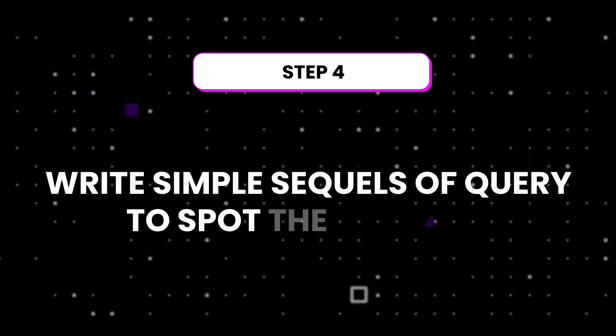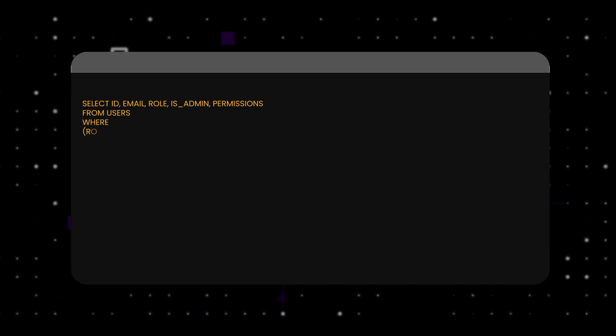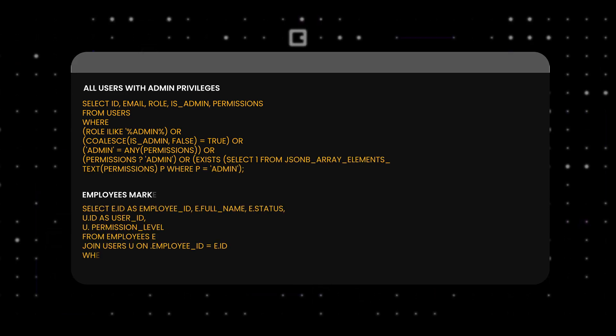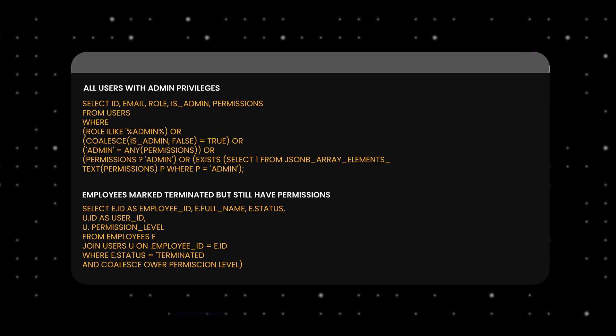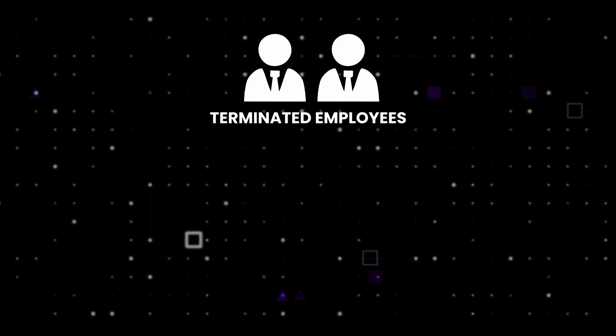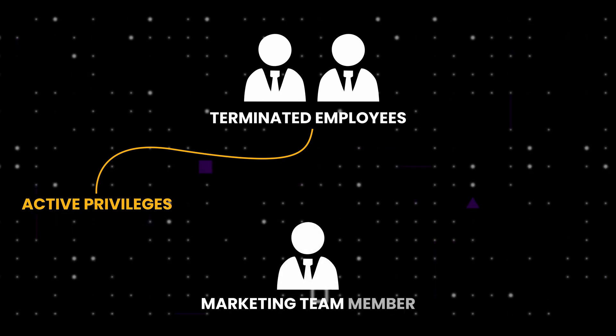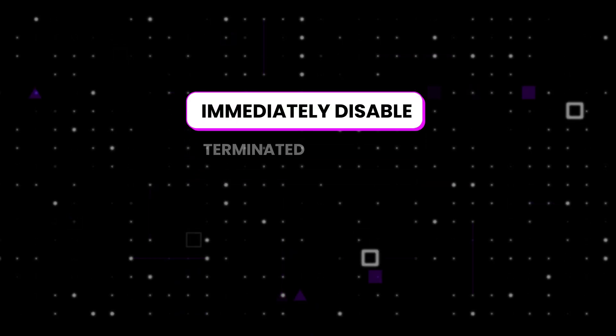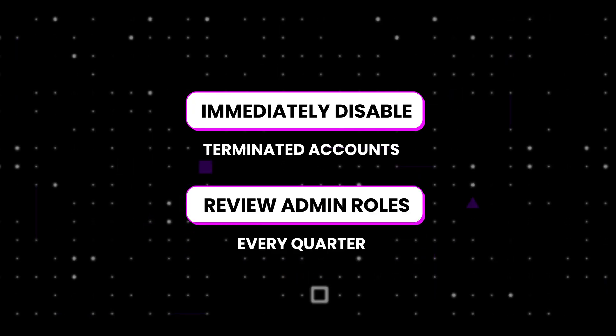Step four: write simple SQL queries to spot the problems. For example, run a query that lists all users with admin privileges, then one that shows any employees marked as terminated but still have permissions set to anything other than none. This is exactly how a real IAM analyst or auditor would start finding risk. Step five: write a short summary that flags these issues — for instance, 'two terminated employees still have active privileges and one marketing team member retains admin access on engineering systems.'